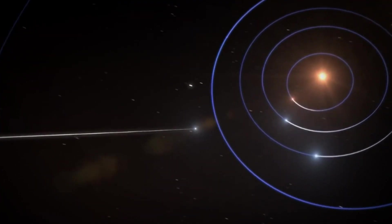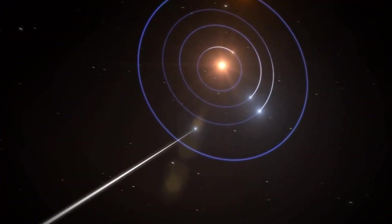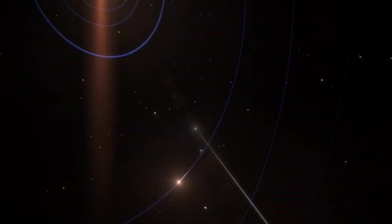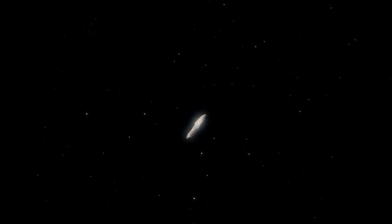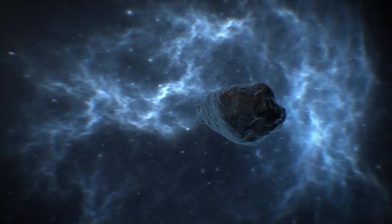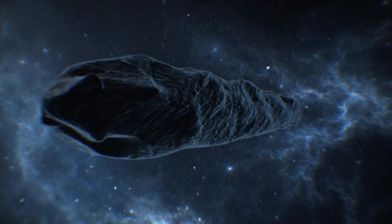It managed to classify it as a comet C slash 2017 U1, then as an asteroid A slash 2017 U1. In the end, they decided not to agonize and simply called it 1I, which means the first interstellar. There's no way to identify the object any more precisely.